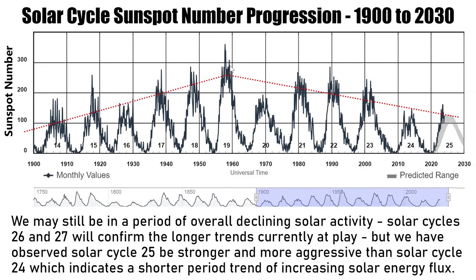We can also pump these energies into our body, though consciously. We also see our energy increase happening now from the sun and from other natural environmental factors. Here we have our solar cycle sunspot progression from 1900 to 2030. We see that there was an increase from solar cycle 14 up to 19. Solar cycle 19 is the strongest solar cycle we've had in the past 120-plus years, with sunspot numbers going above 300 at one point.